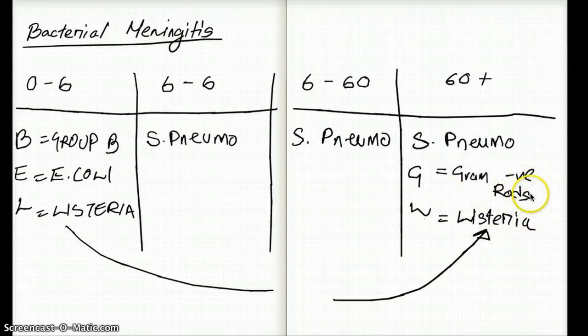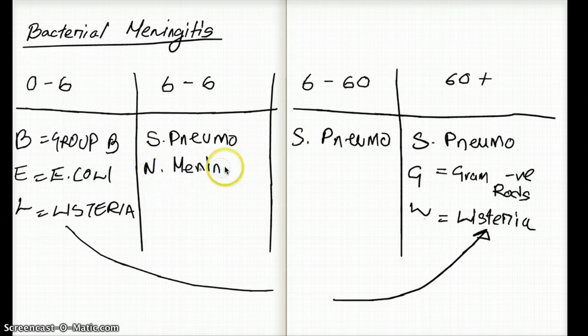What about 6 months to 6 years? After Strep Pneumo, the next most common is going to be Neisseria meningitidis. This is going to be common in both age groups, from 6 months all the way to 60 years.